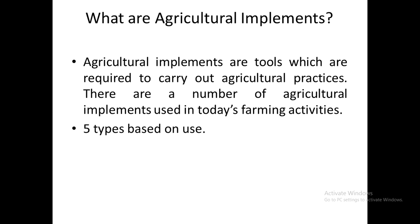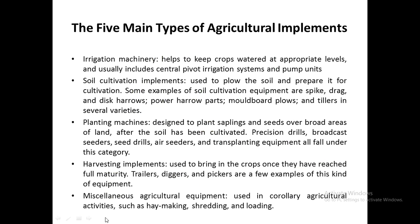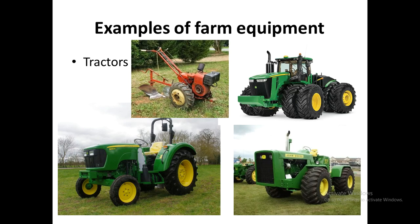There are five types of agricultural implements based on use: irrigation machinery, soil cultivation implements, planting machines, harvesting implements, and miscellaneous agricultural equipment. Irrigation machinery includes pivotal irrigation systems, pump units, and micro irrigation systems. Soil cultivation implements include tillage implements, cultivators, plows, and harrows. Planting machines include seeders and transplanters. Harvesting implements include harvesters, combine harvesters, trailers, diggers, and pickers. Miscellaneous implements include haymakers, shredders, and loaders.